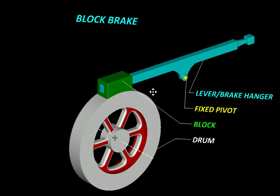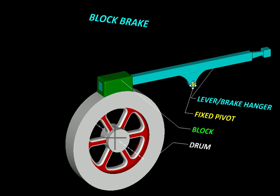There are several possible arrangements of this pivot, it could be on the other side of the shoe as well. We are just going to look at one simple arrangement and then effort will be applied at one end of the lever so that the block can be pressed against this rotating drum.